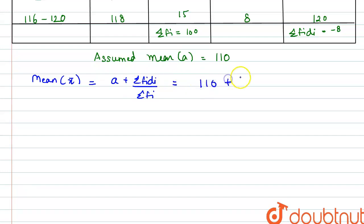If we put the values, we have a as 110 plus summation of fi di as minus 8 divided by summation fi as 100. So it is 110 minus 0.08. So we have the mean as 109.92.